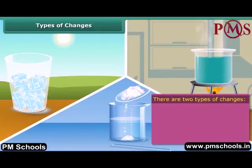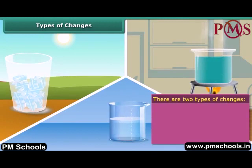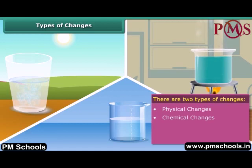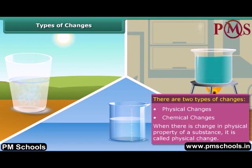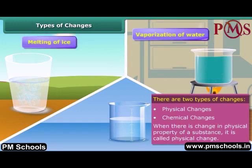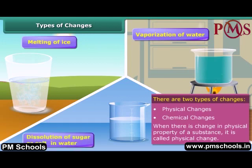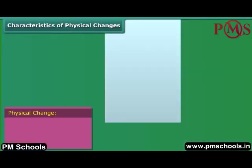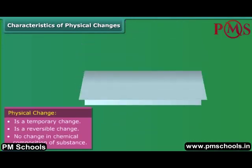Changes are of two types: physical change and chemical change. An example of a physical change is a solution of sugar or salt in water. Take a piece of paper and fold it to make a paper airplane.